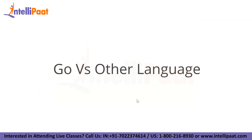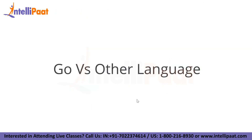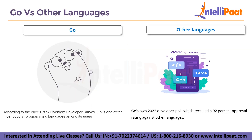Now let's see Go versus other programming languages. According to the 2022 Stack Overflow developer survey, Go is one of the most popular programming languages among its users, receiving a 92% approval rating among Go developers.